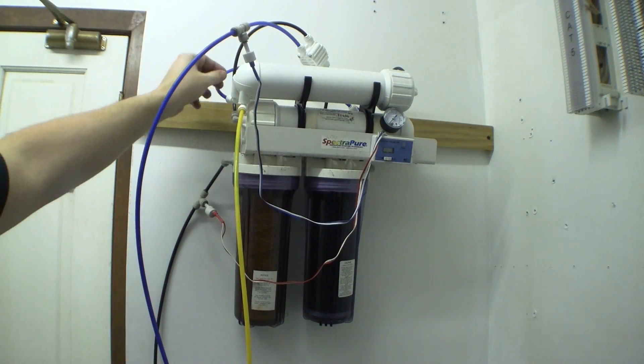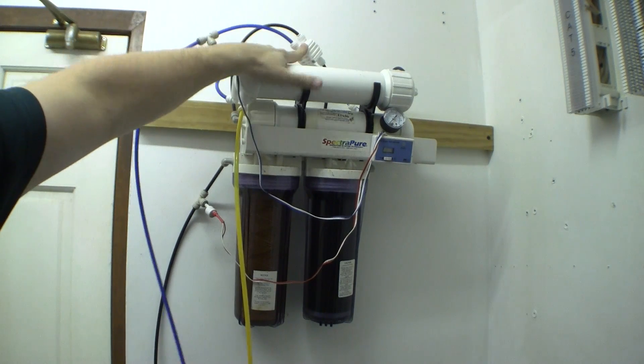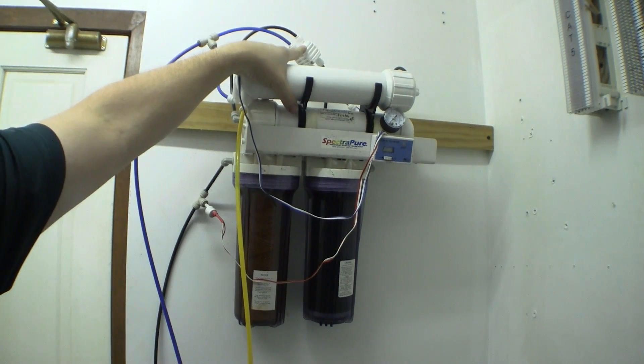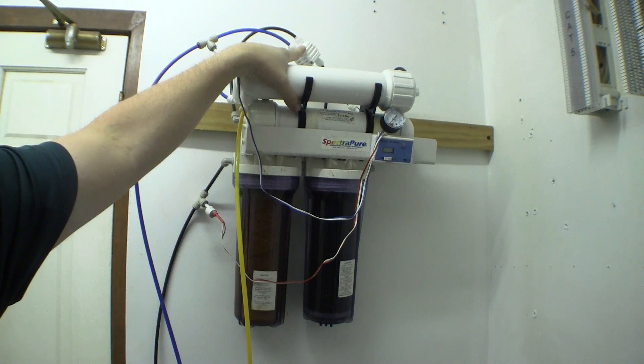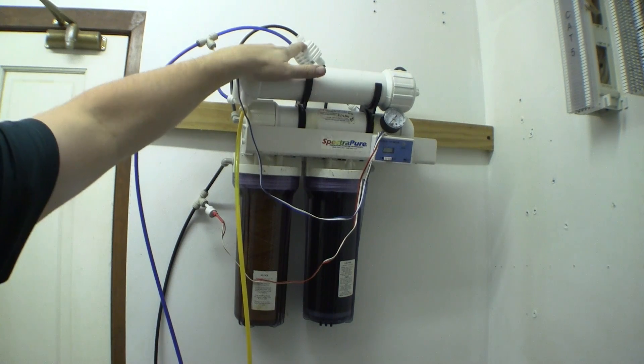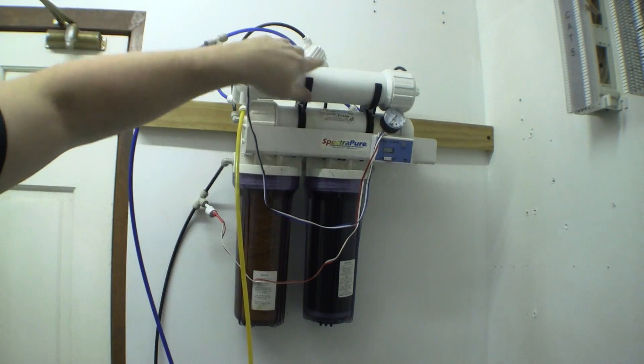And then it goes through this unit which is part of the disconnect valve. Whenever I have water go to my reservoirs I have a float valve and when the reservoirs are full the unit is told to stop. This is part of that and I'll explain that when we get to it a little bit later.